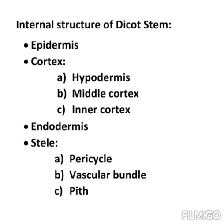Inner cortex is made up of a few layers of parenchyma cells. It helps in gaseous exchange and stores food materials. So to summarize the cortex: hypodermis has collenchyma cells (mechanical support), middle cortex has chlorenchyma cells (photosynthesis), and inner cortex has parenchyma cells (gaseous exchange and food storage).